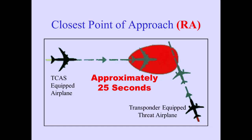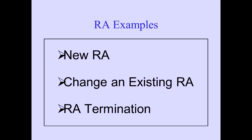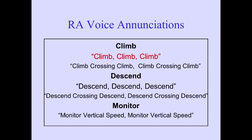An RA is a warning, and is issued when TCAS detects a transponder-equipped aircraft providing altitude information that will pass your airplane without adequate separation. The RA will be issued approximately 25 seconds before the threat aircraft will reach the closest point of approach. Now let's discuss different Resolution Advisories in some examples. For new RAs or changes to existing RAs, TCAS provides a voice enunciation and PFD vertical guidance to increase separation. TCAS also announces termination of RAs. First, we will discuss new Resolution Advisories. When a new RA is issued by TCAS, one of these five voice enunciations will sound.